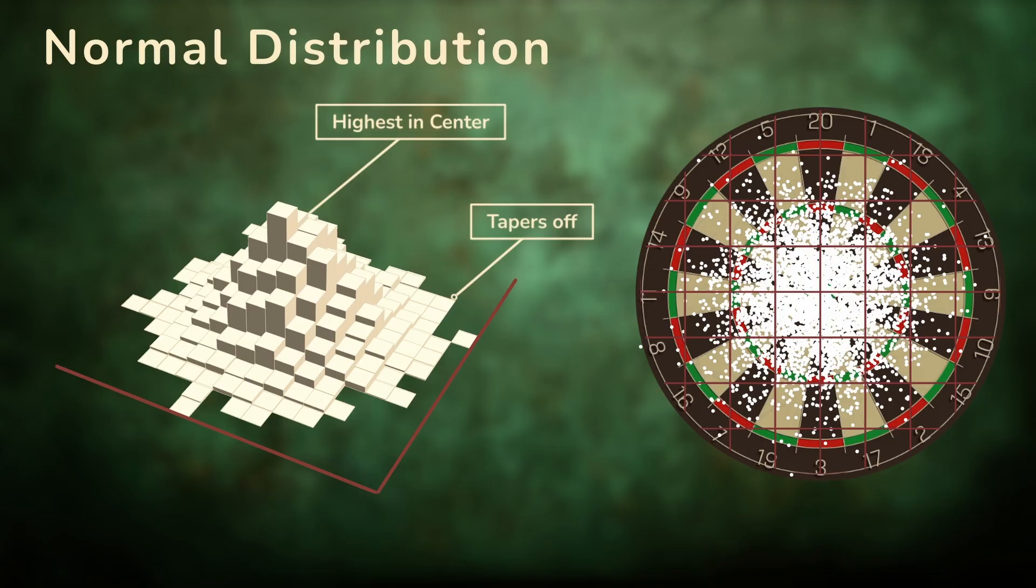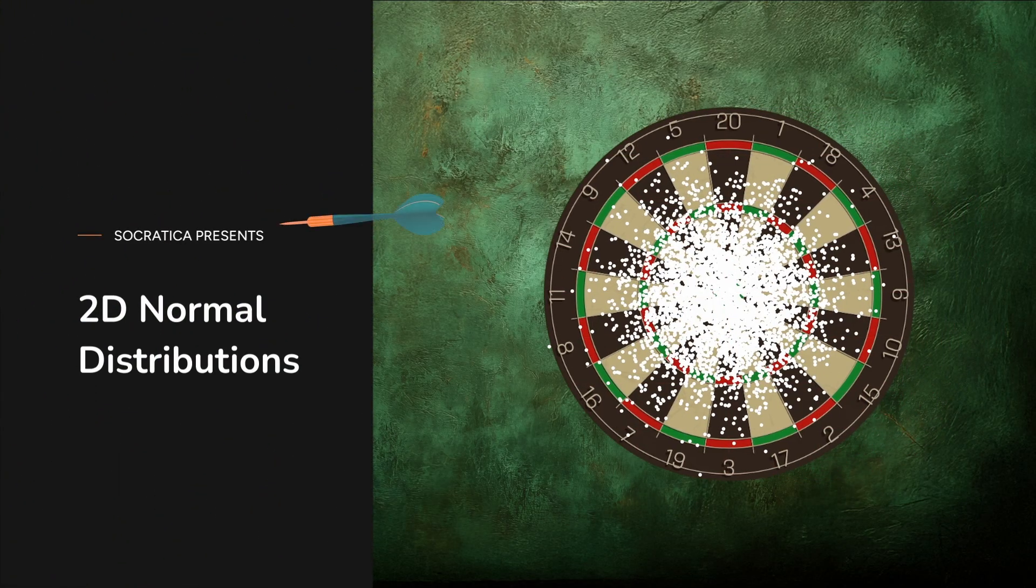This is the two-dimensional counterpart of the bell curve, a bell surface. And just like in one dimension, the shape is not an accident. It's the natural mathematical description of random variation in two directions, the 2D normal distribution.